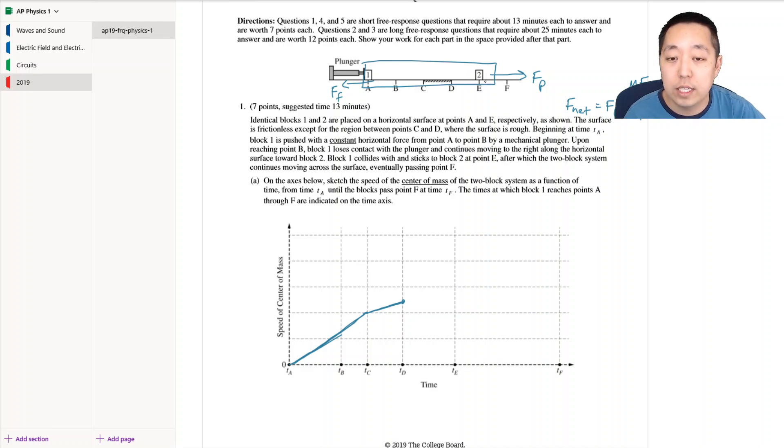And then from D to E it continues along at the same slope as it did before because now we're no longer... actually where does it lose contact? Mechanical plunger loses... oh point B it loses contact with the plunger. Okay sorry, I missed that. So all of this I just did was wrong because it lost contact at point B. So it was constant until point B, then from B to C because it lost contact with the plunger the net force is zero so the acceleration would be zero.